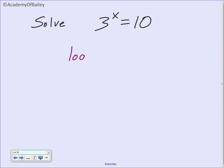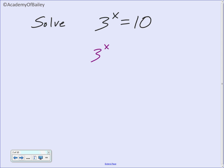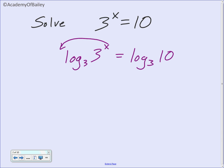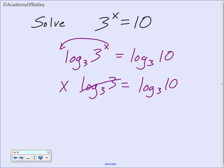If we look, the log base 3 raised to the third power is going to be equal to 1. So that's why I'm looking at log base 3 for this. If I have 3 to the x power, I just want to take log base 3 of the left side and log base 3 of 10 on the right side. The power rule for logarithms says I can take the x and put it out front: x times log base 3 of 3, equals log base 3 of 10. Then log base 3 of 3 cancels to become 1, so x is equal to log base 3 of 10.